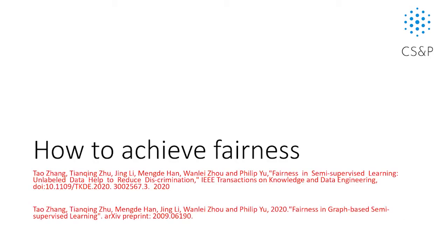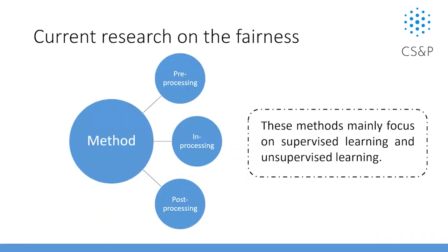My first topic is about how we can achieve fairness by using unlabeled data, or how we can improve fairness by increasing the training dataset. In current fairness research, I roughly divide methods into three directions: preprocessing, which manipulates datasets to improve fairness; in-processing, which adjusts models or optimization methods; and post-processing, which adjusts the prediction model to achieve fairness. Normally these methods mainly focus on supervised and unsupervised learning.